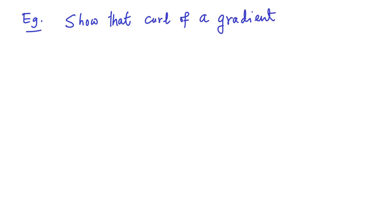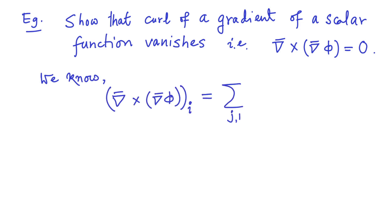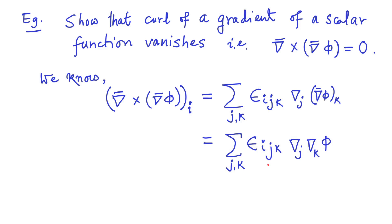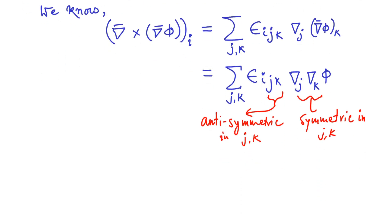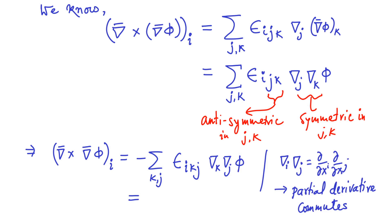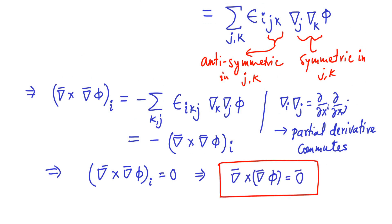Let us consider the example showing that the curl of the gradient of a scalar function vanishes, that is, curl of gradient of phi equals zero. We know the i-th component of curl of a vector can be expressed as summation over j and k of epsilon_ijk times del_j and the k-th component of the gradient of phi. Now we know that the Levi-Civita symbol is anti-symmetric in the indices j and k, whereas del_j del_k are symmetric in j and k, since partial derivatives commute. It is therefore straightforward to show that an arbitrary component of curl of gradient of a scalar function vanishes, and thus curl of gradient of a scalar function is a null vector.